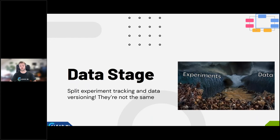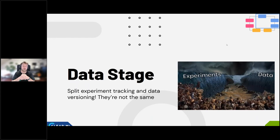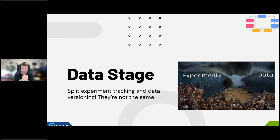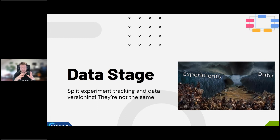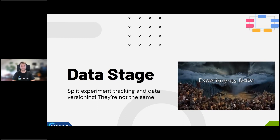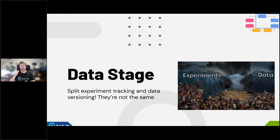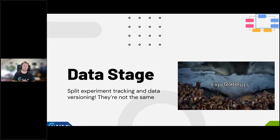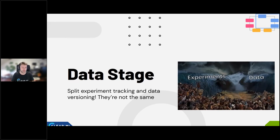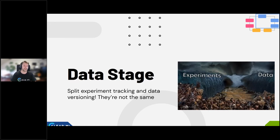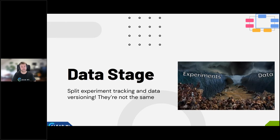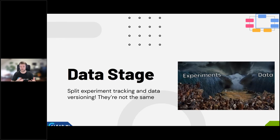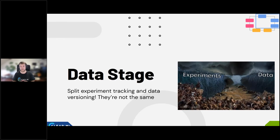Going back to our flow — the first stage is data pre-processing, which I'll call the data stage. The first thing I want to mention is: please split experiment tracking and data versioning. Git is not made for data versioning. People tend to use it for tabular data, but for anything else it's the wrong tool. Even Git LFS has its issues. What you actually need is a dedicated data versioning tool, and I'll show you why they're useful.